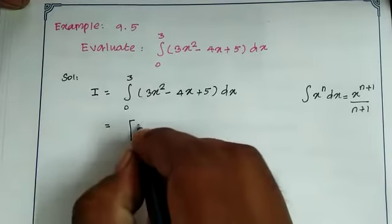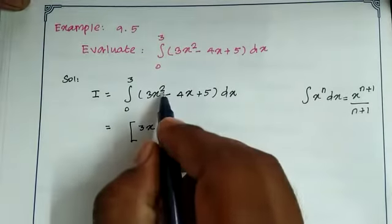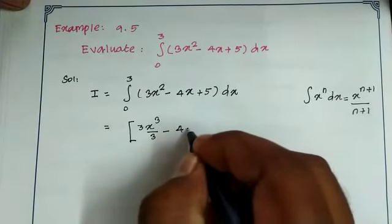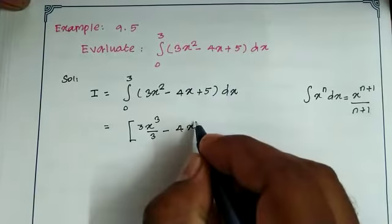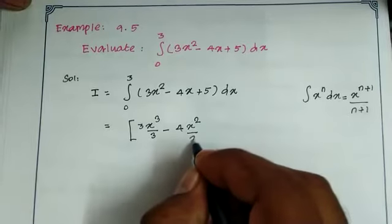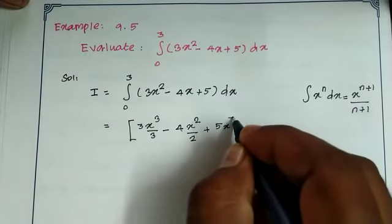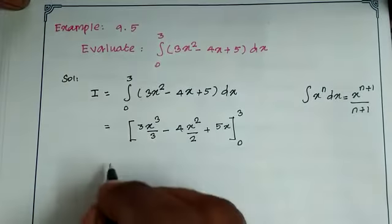For 3x square, n value is 2, so x cube by 3. Minus 4x, n value is 1, so 1 plus 1 is 2 by 2. Plus integral 5 dx, that is 5x, from 0 to 3.